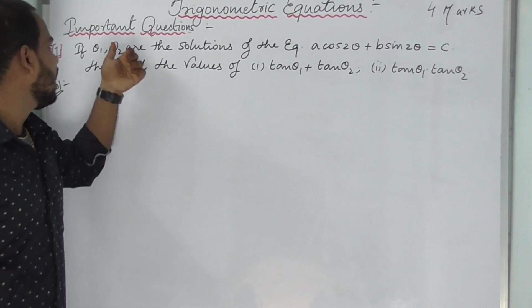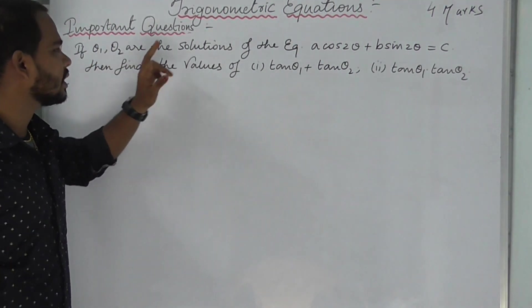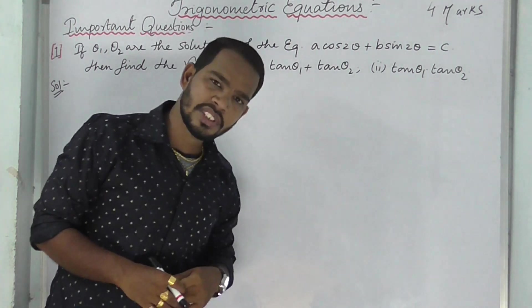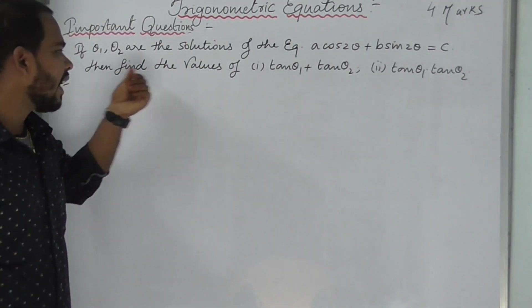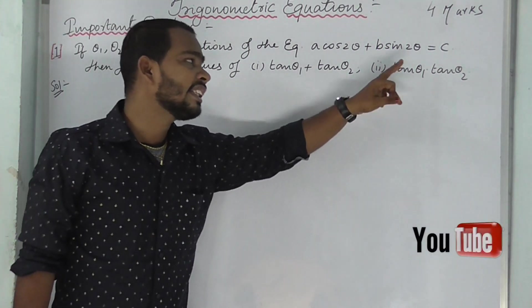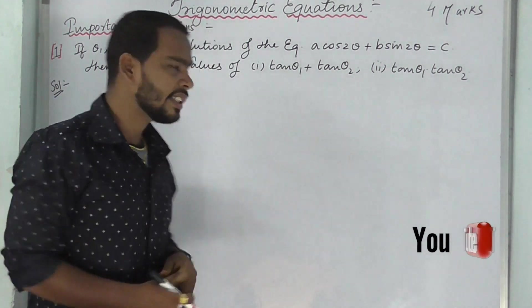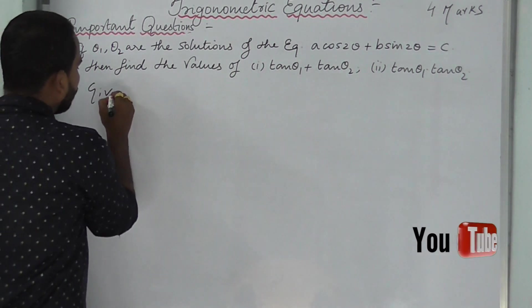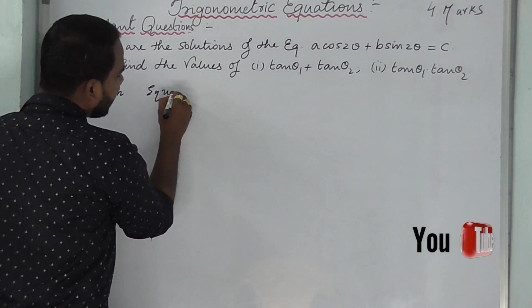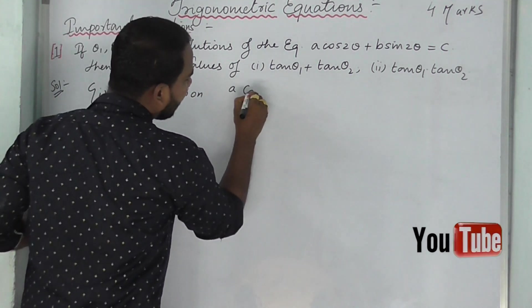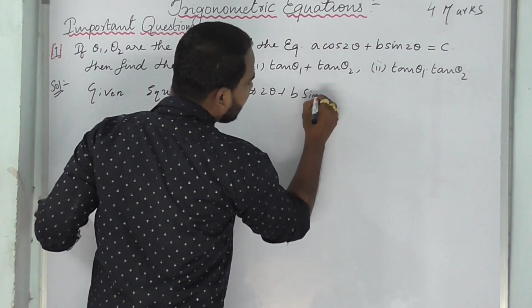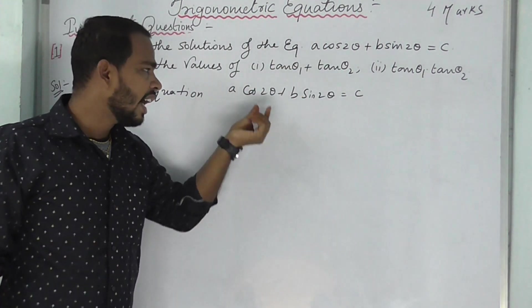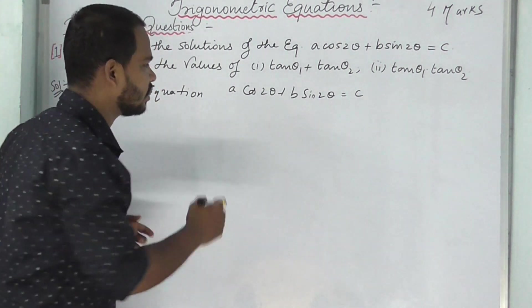For public examinations, here is the equation: if theta one and theta two are solutions of the equation A cos2θ plus B sin2θ equals C, find the values of tan θ₁ plus tan θ₂ and tan θ₁ into tan θ₂ — that is, the sum and product of the roots. We will express cos 2θ in terms of tan alone.